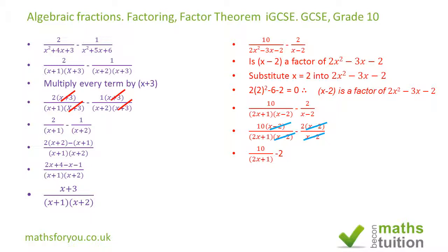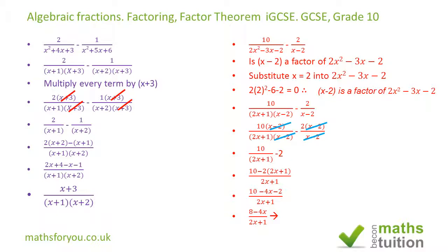Our lowest common denominator is now (2x+1). We have 10 minus 2(2x+1) in the numerator. Opening up the brackets we have 10 minus 4x minus 2 — the minus sign changes the sign in the bracket — so we end up with 8 minus 4x. Taking out the common factor of 4, we get 4(2 - x).